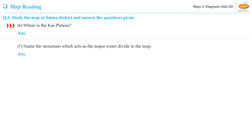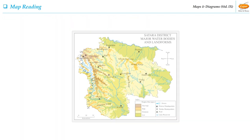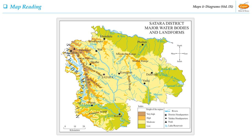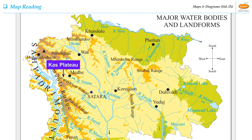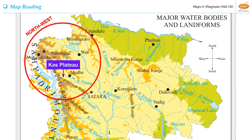The sixth question of this activity is: Where is the Kass Plateau? As visible on the map, the Kass Plateau is located on the northwest of Saatara city.